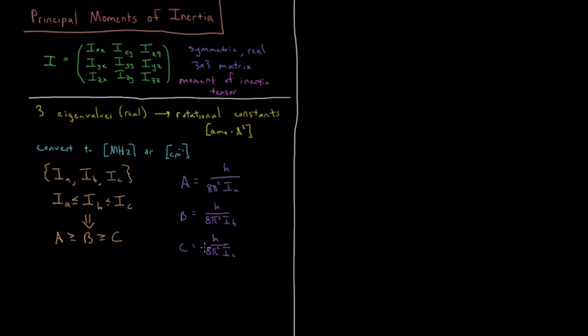If you're confused or want more information about where these values come from in terms of Planck's constant over 8π², you can look in the rigid rotor chapter of the quantum chemistry playlist. So we've got these three rotational constants now for our given molecule. What do the relative values of these constants tell us about the structure of the molecule?